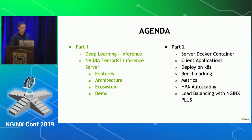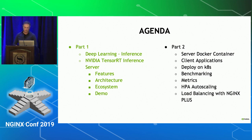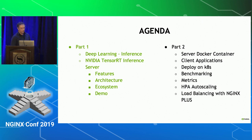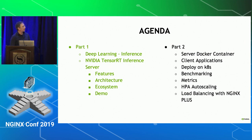In the second part, I will go a little bit more into the technical details, showing how to run the inference server within a Docker container, how to use a client application to send inference requests, how to deploy the inference server on Kubernetes, some benchmarking, the metrics that TensorRT exposes, and then we will configure an HPA auto-scaling and integrate load balancing with NGINX Plus.